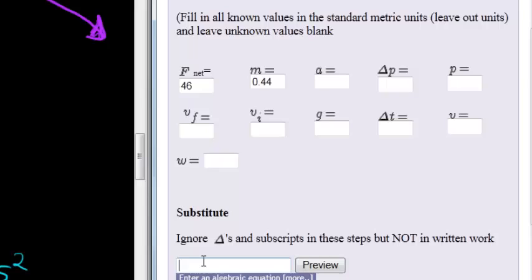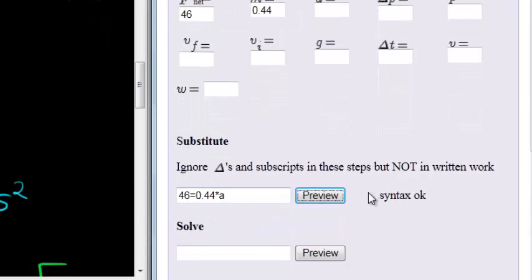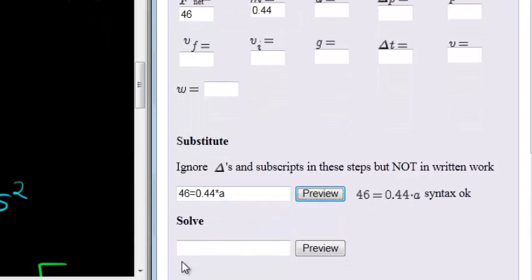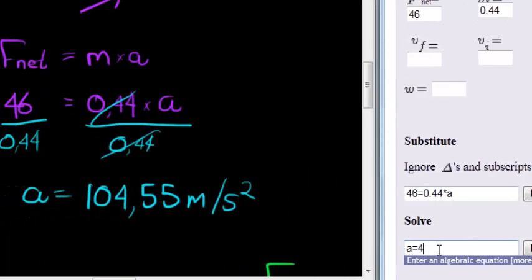Now substituting, we get that the force 46 is equal to the mass which is 0.44 times the acceleration. Our acceleration is equal to 46 divided by 0.44, which gave us 104.55 meters per second squared.